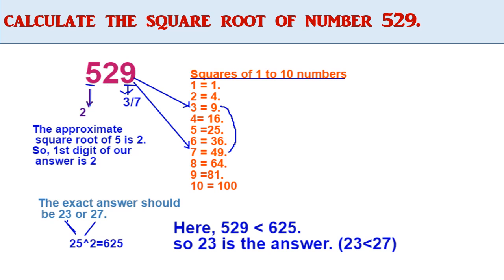Then, see here 5. The first digit of our number is 5. The approximate square root of 5 is 2, so the first digit of our answer is 2. The exact answer should be 23 or 27. In deciding whether our answer is 23 or 27, we find 25 squared equals 625. Here, 529 is less than 625, so 23 is the answer.